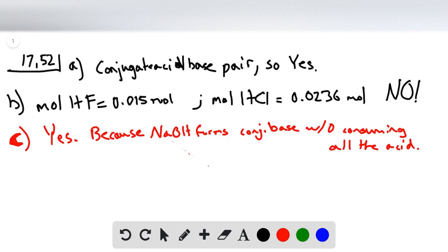So now if we look at part d, we have methylamine and methylammonium chloride. So since we have a base and a conjugate acid, we say that we have the acid-base pair, so yes.